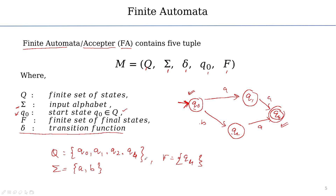δ (delta) is called the transition function. Transition function means: how do we move from one state to another — for example, from state q0 to q1? The logic behind moving from one state to another state is called the transition function. Without the transition function, finite automata has no importance. We are creating a mathematical model, and the transition function tells us how we move from one state to another.